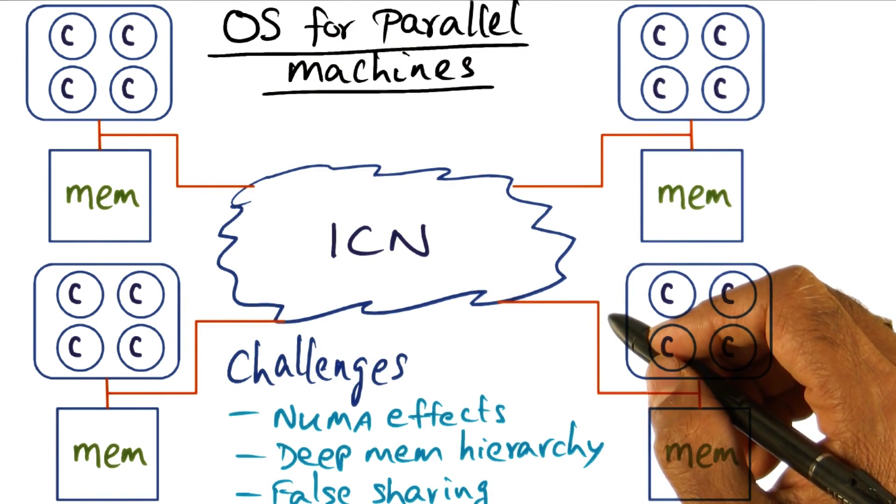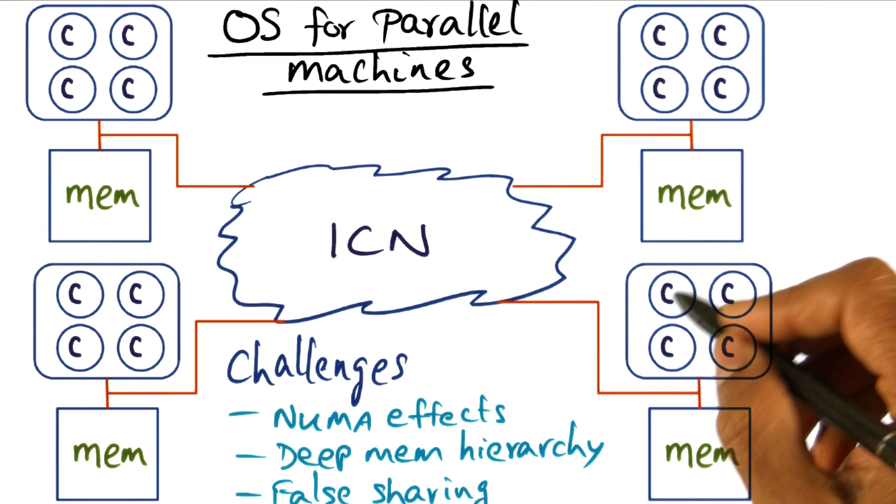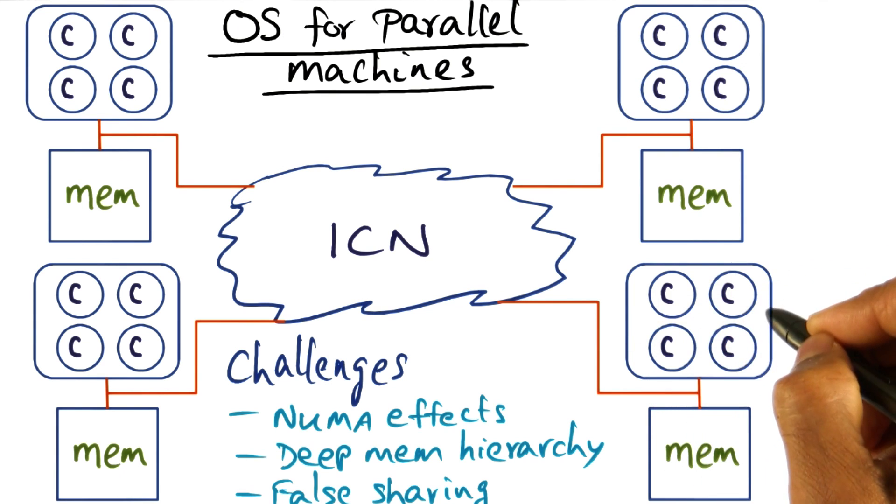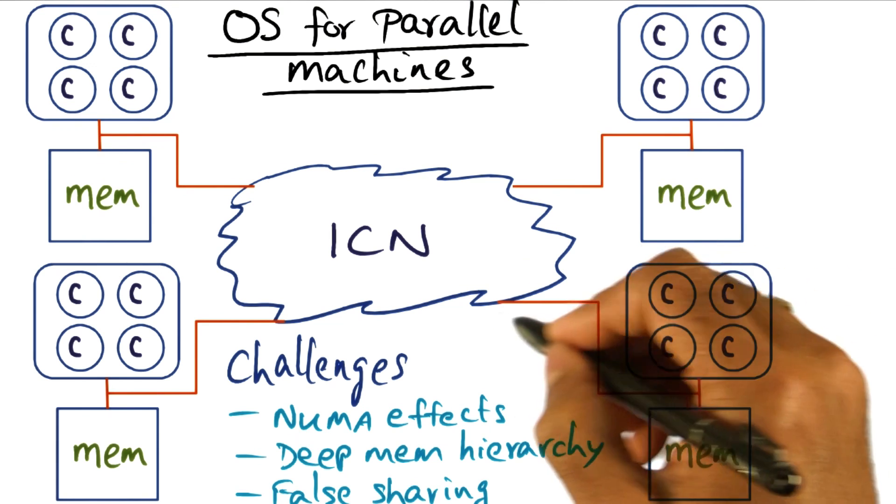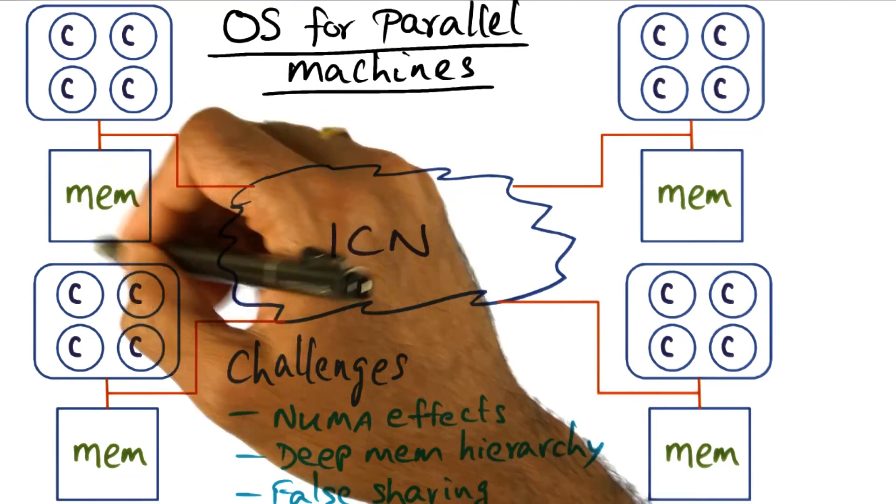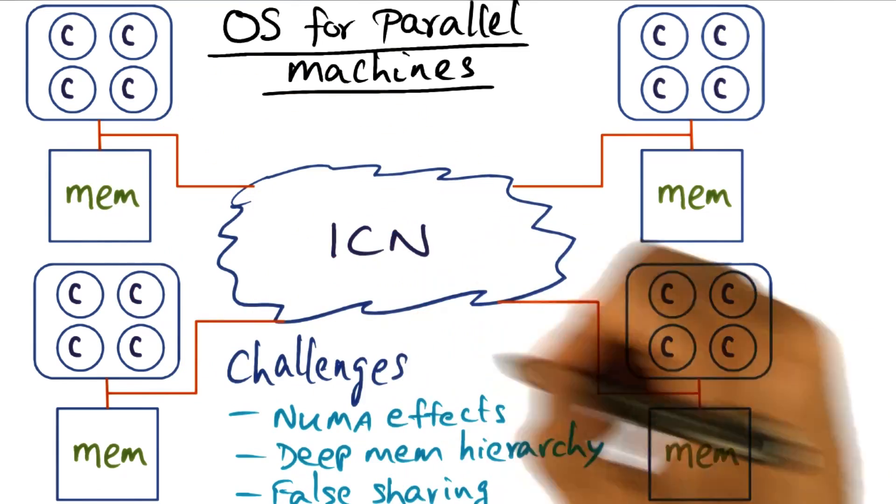And what happens with this NUMA architecture is that access, there is differential access to memory, whether this processor is accessing memory that is local to it, or it has to reach out into the network and access some memory that is farther away from where it is.